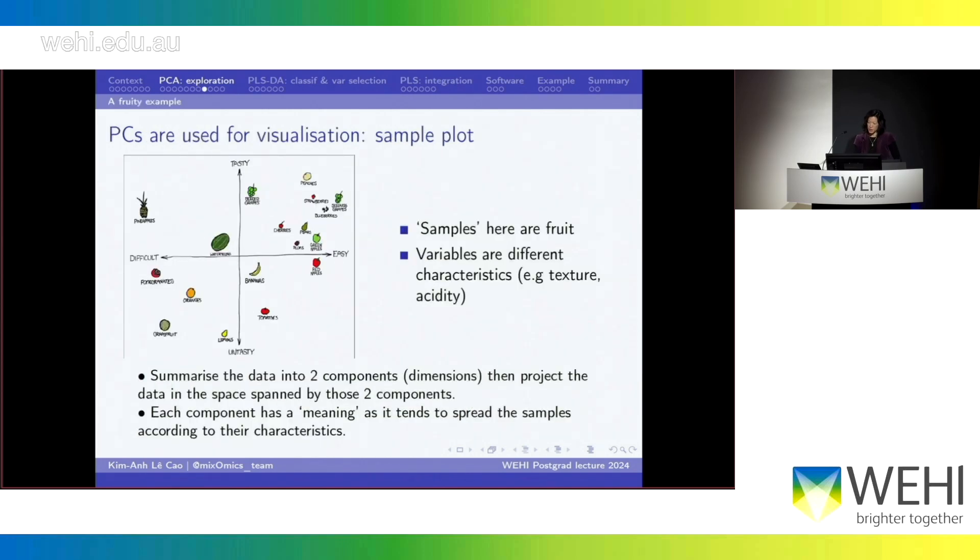Okay. So, you can look at the, so this is a PCA sample plot of a toy example, where here the samples that were measured, so in the rows, are different type of fruit. And then the variables or the parameters that we measured are different characteristics of the fruit, for example, the texture, the acidity, and so on. So, if you take that data set and you plug it into PCA, you would obtain a plot like this. It's called a sample plot. So, the fruit are my samples.